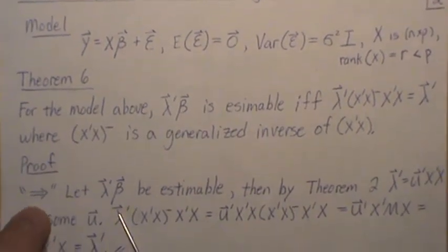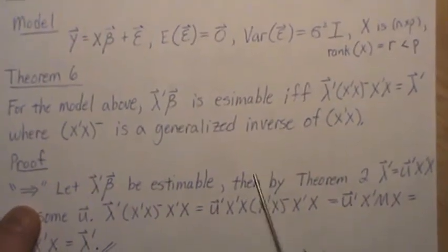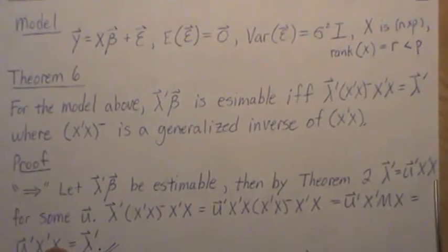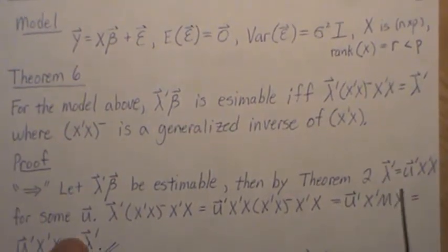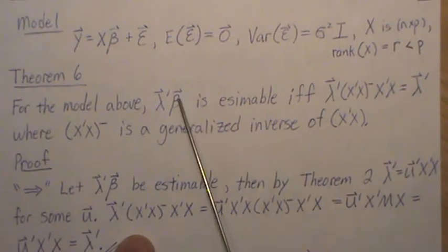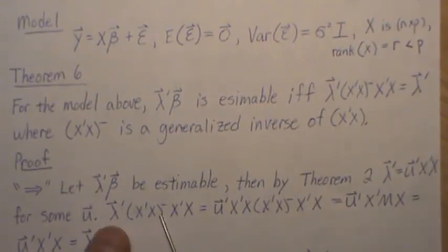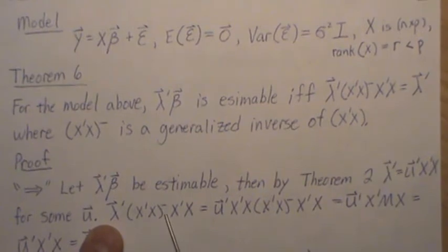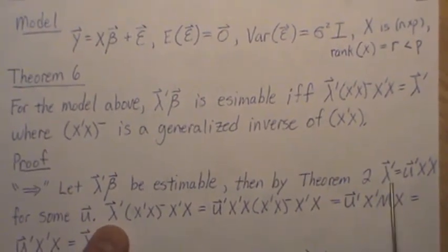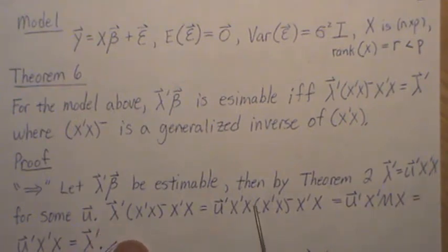So let's prove it. Let's go this way. So let's assume that lambda beta is estimable. Then by theorem two, we know that this equation holds for some u. Now, since we've assumed it's estimable, let's show that this is true. So you take that lambda, multiply it by this. But by theorem two, lambda is u transpose x transpose x. So we put that in right here.